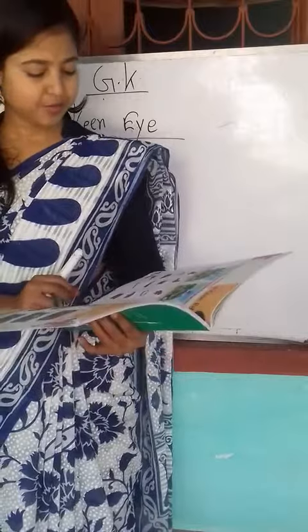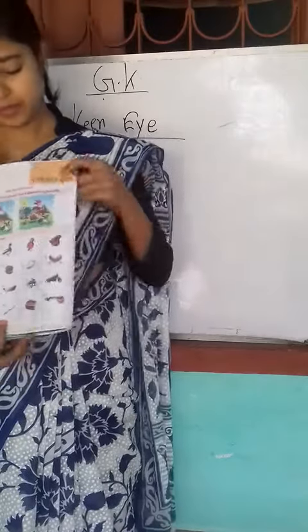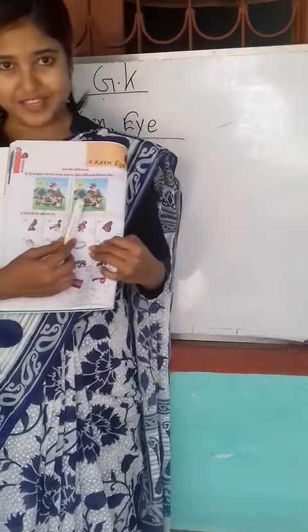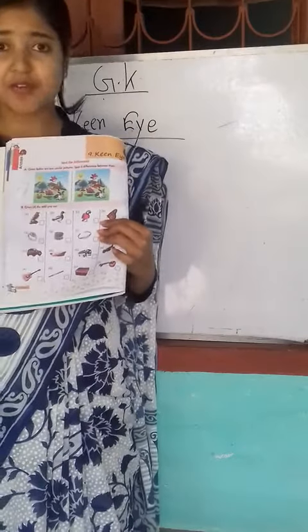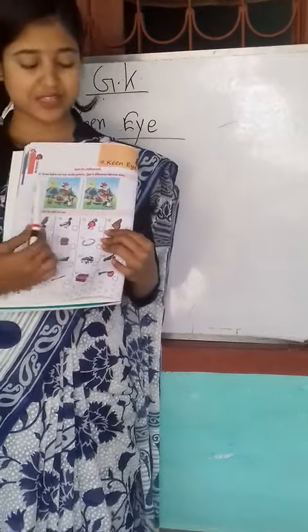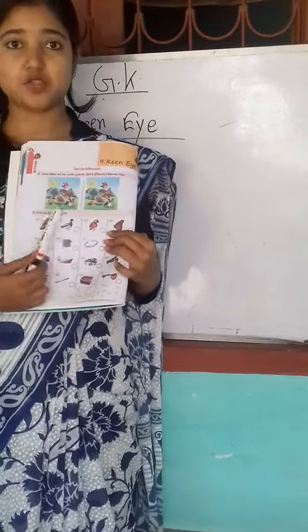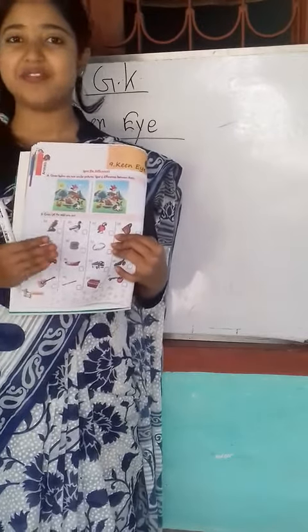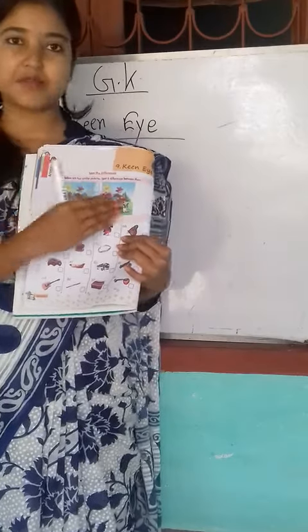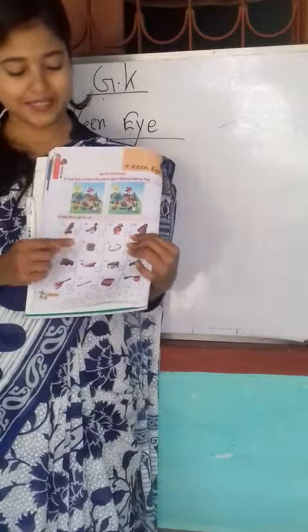Now in your book page number 14, there are two similar pictures given. You have to find out six differences between these two pictures — from here and here. You have to find out six differences between this picture and write them down in your copy.